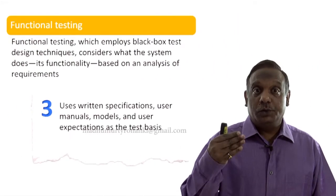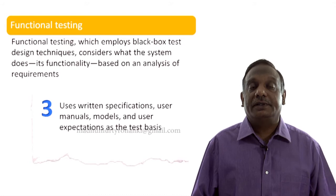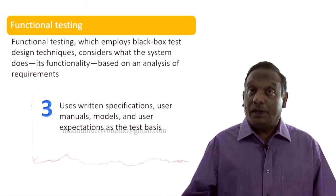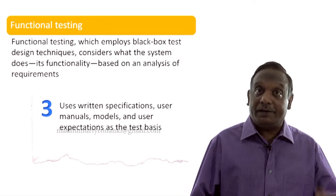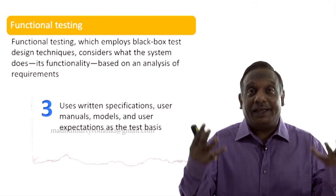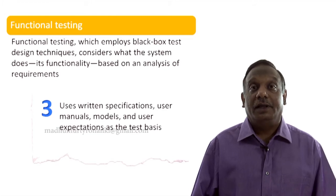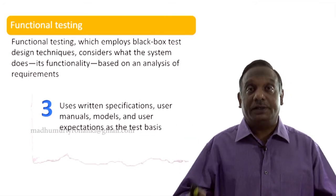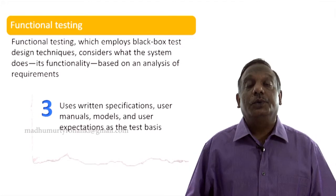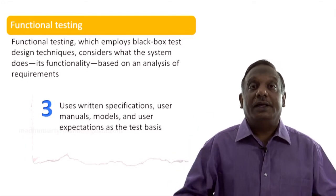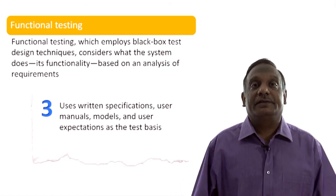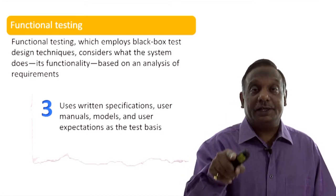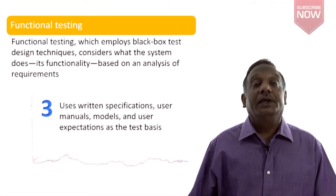We use written specifications as the test basis to perform functional testing. Sometimes we use user manuals, and sometimes we use the software's design models like the state transition model or the use case model, and sometimes the user's expectations. All the information used for doing testing is called the test basis. So the third point: functional testing uses written specifications, user manuals, models, and user expectations as the test basis.